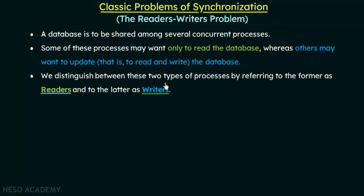We distinguish between these types of processes by referring to the former as readers and the latter as writers. Processes that only want to read from the database are known as readers, and processes that want to read and write are known as writers.